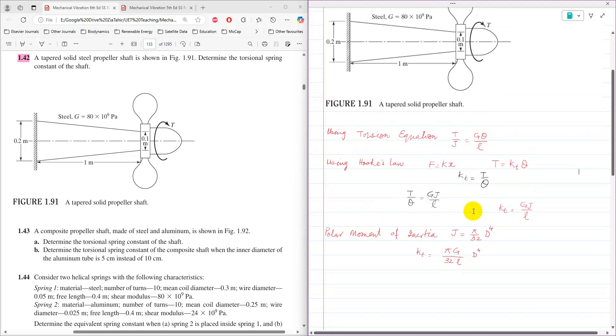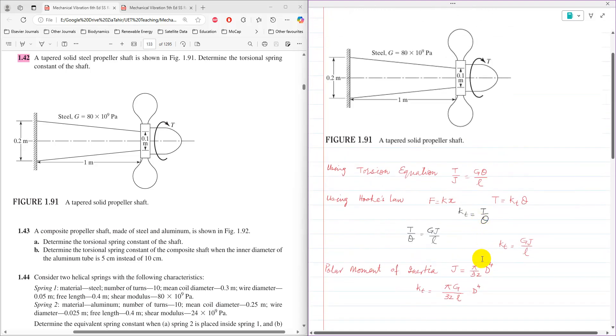Polar moment of inertia for shafts, if the shafts are uniform, is pi by 32 D raised power 4, and that is expression KT for shaft with uniform diameter.